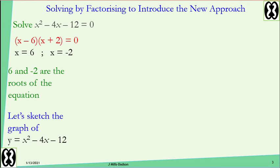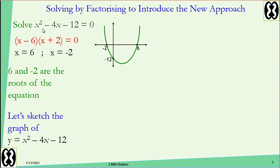Now let's sketch the graph. Don't worry — the sketching is not part of the new solution; it's just to help develop the method. My roots are negative 2 and 6, the y-intercept is negative 12, and it's a positive u-shaped graph because the coefficient of x squared is positive.